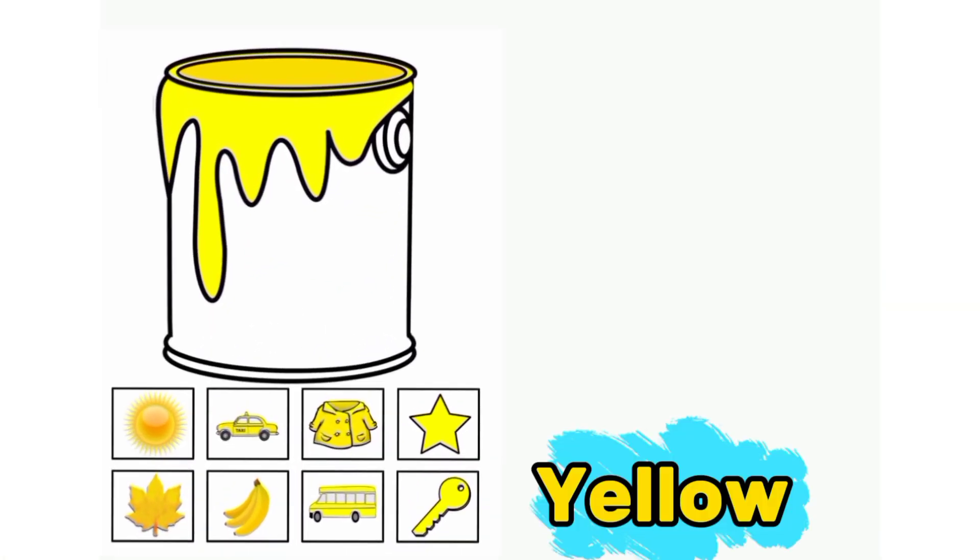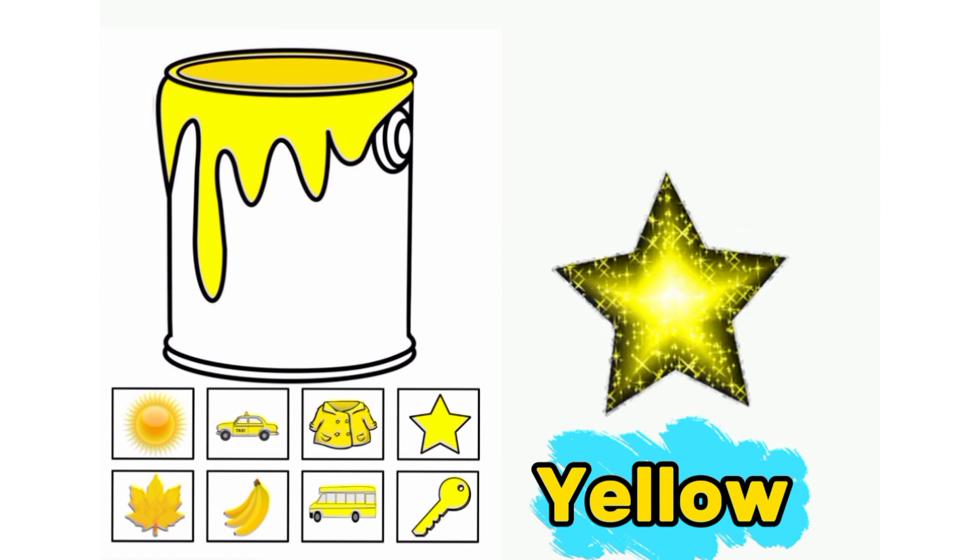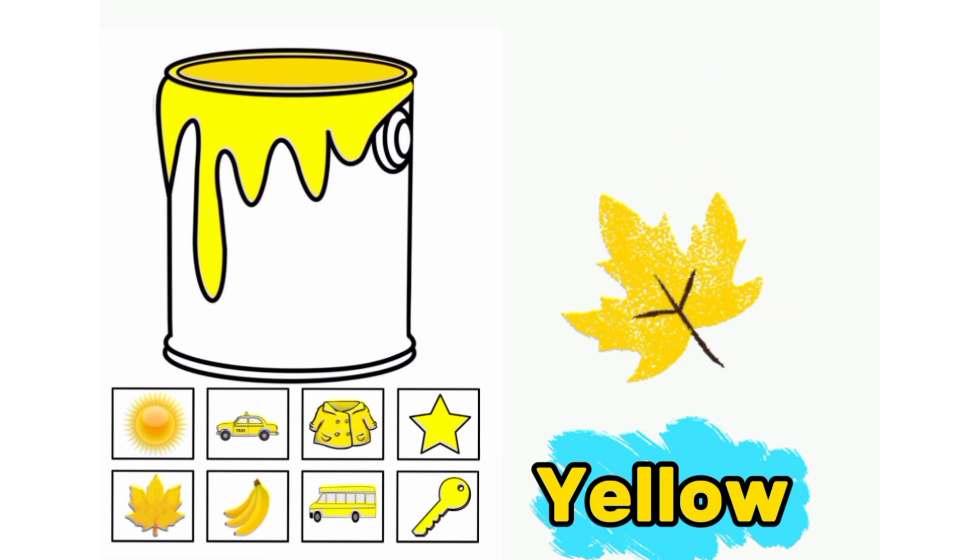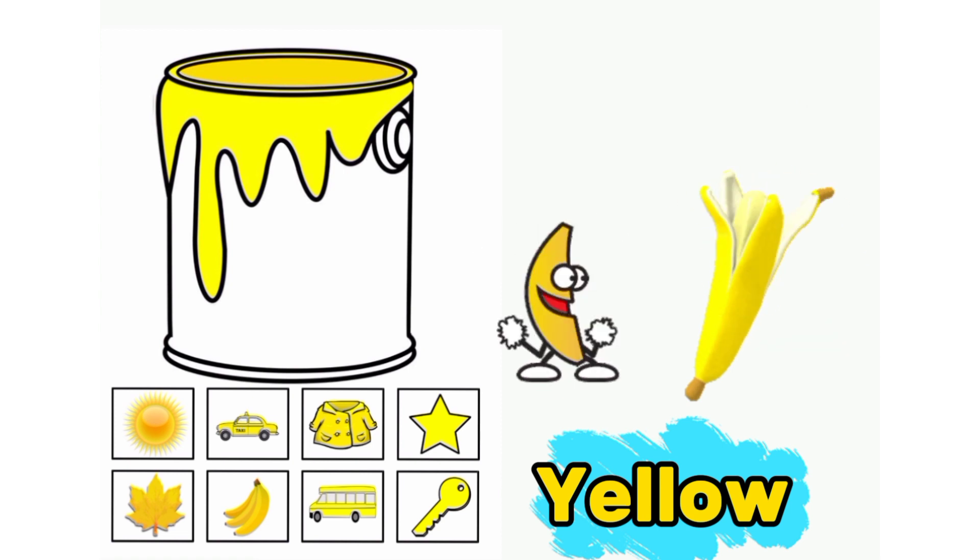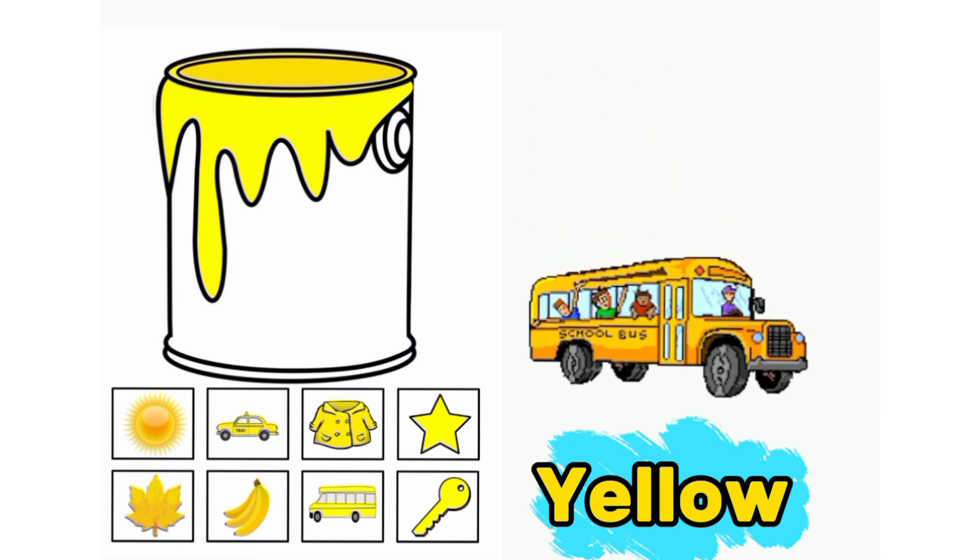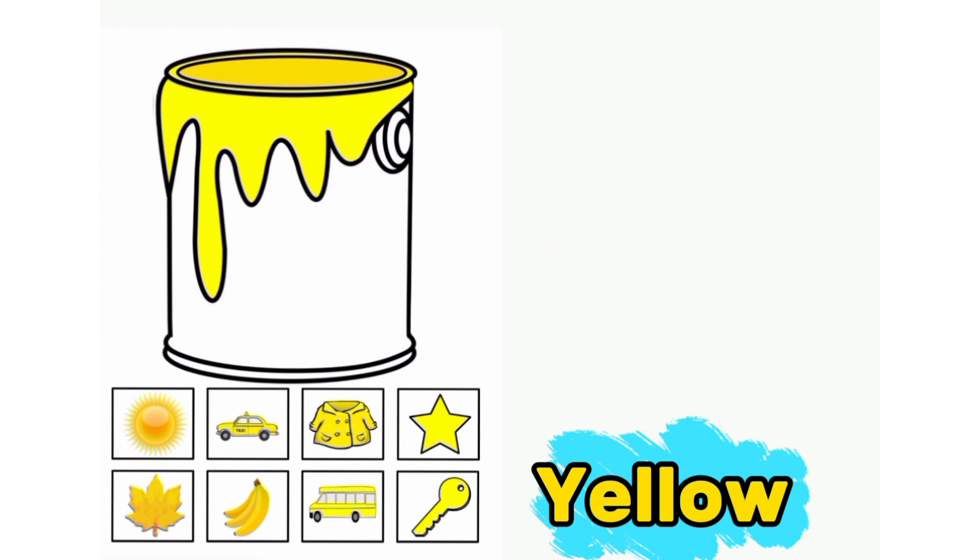Yellow. This is yellow color. Yellow sun, yellow car, yellow shirt, yellow star, yellow leaf, yellow banana, yellow bus, yellow key.